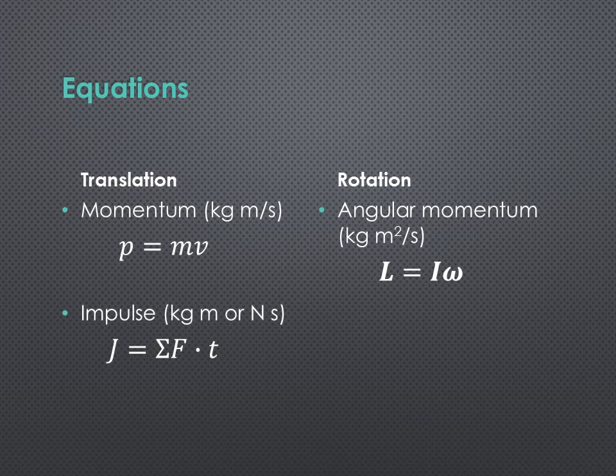So, for now, we'll just go with it. But, L equals I omega. Remember, I is the rotational equivalent of mass, and omega is the rotational equivalent of velocity.